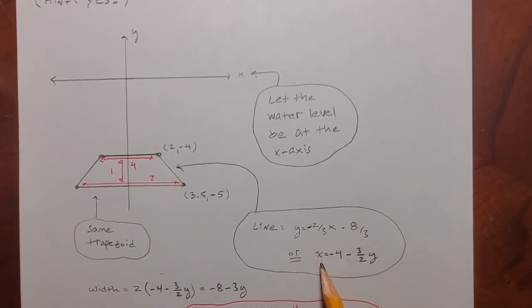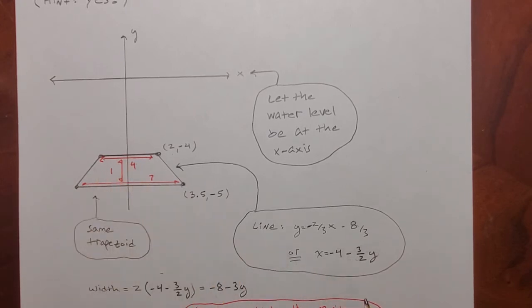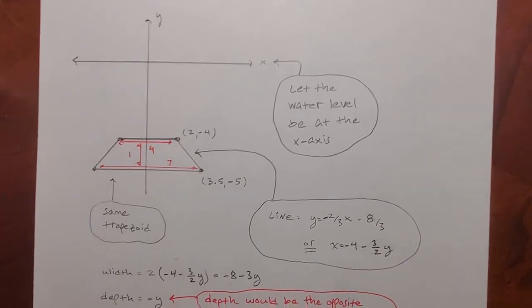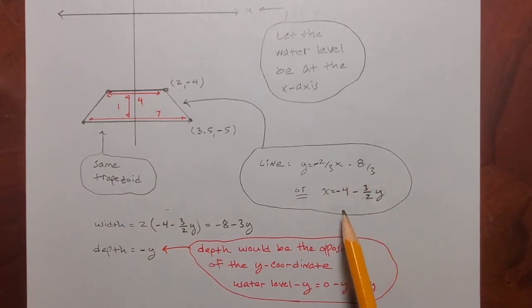Solving it for x will give me what I need for the width of this thing. And so I solve it for x. I'll get negative 4 minus 3 over 2 y. Okay. So the width as a function of y is going to be double this. Okay. All right. And so I get negative 8 minus 3 y.